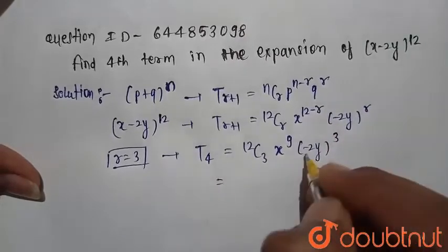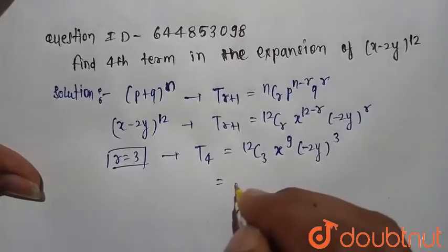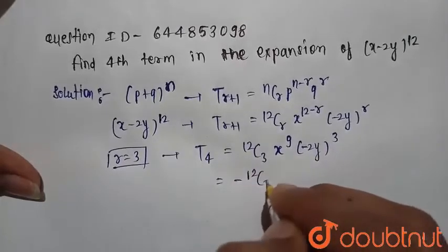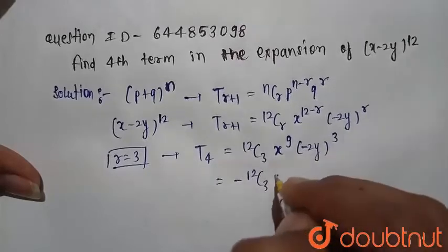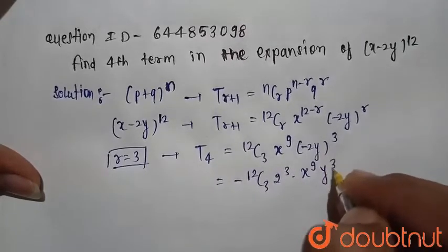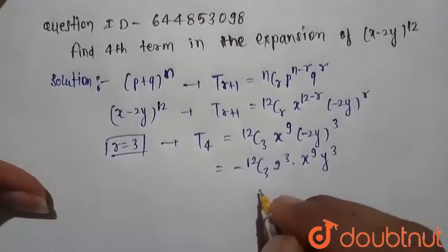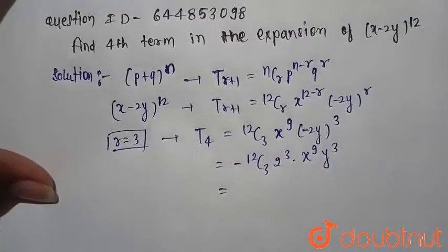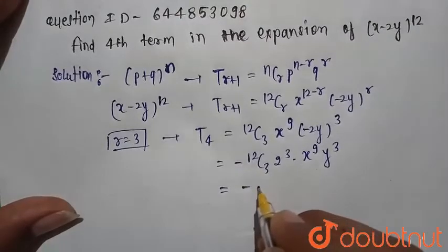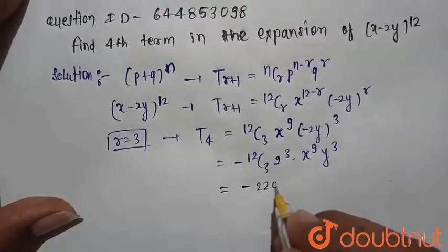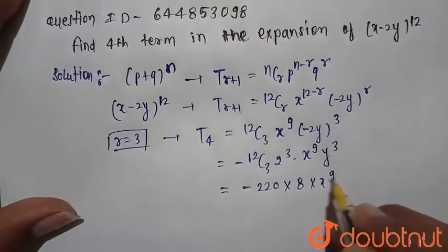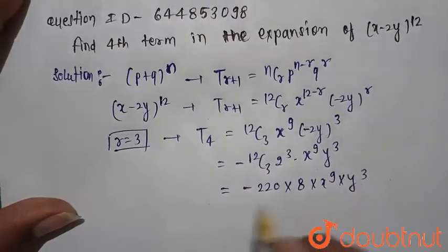Here negative with an odd power, so minus comes out, and we get minus 12C3 into 2 raised to power 3 into x raised to power 9 and y raised to power 3. This is equal to minus 12C3 into 2 cubed, that is 8, into x raised to power 9 into y raised to power 3.